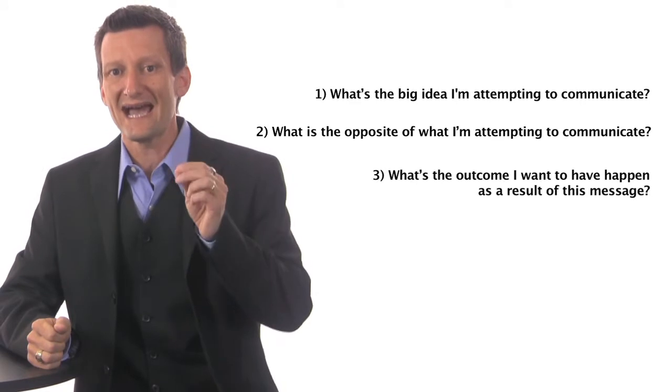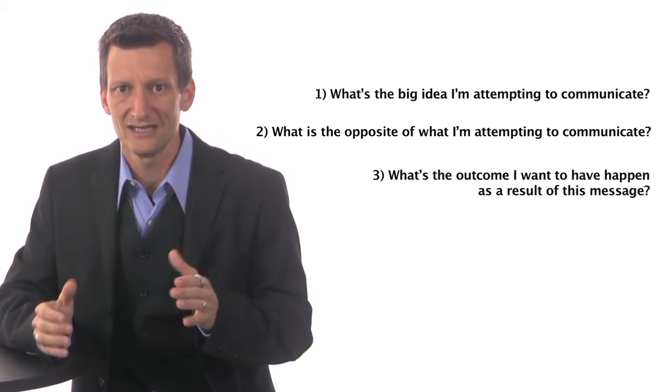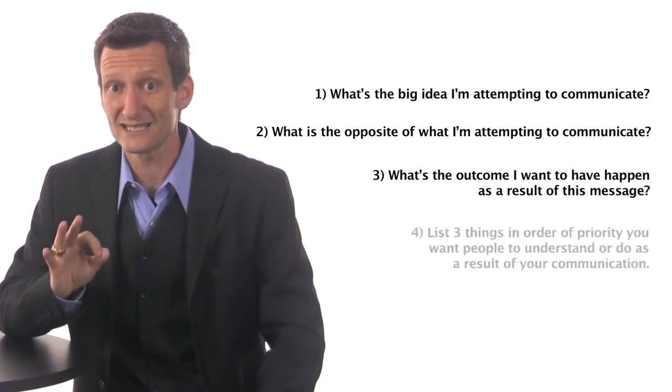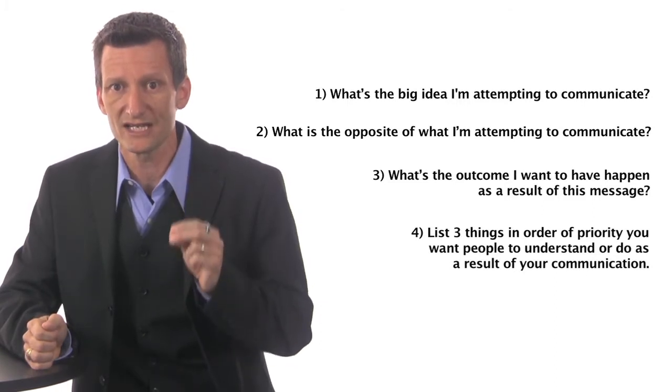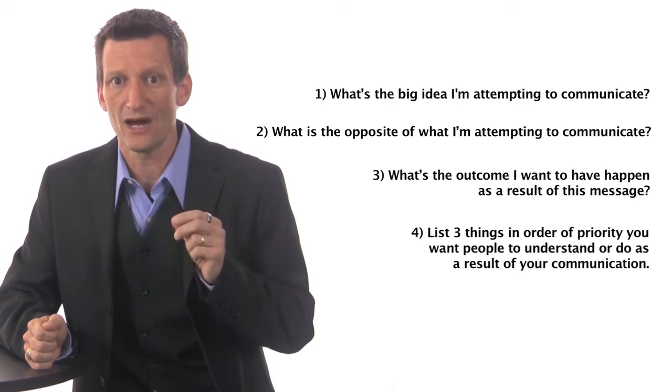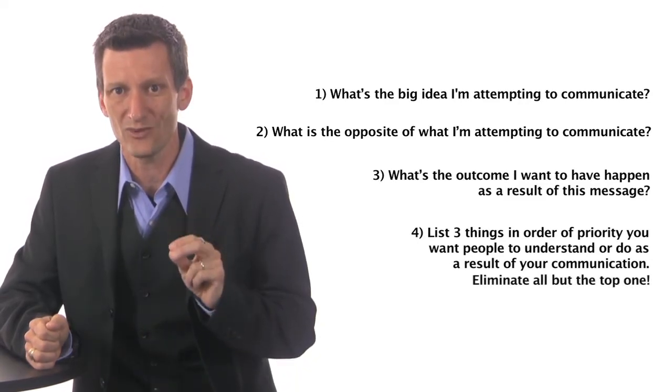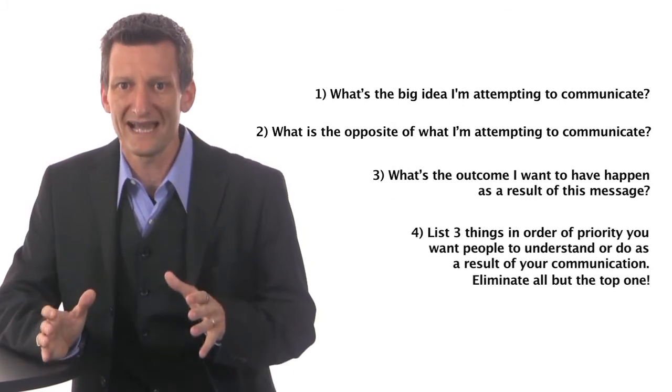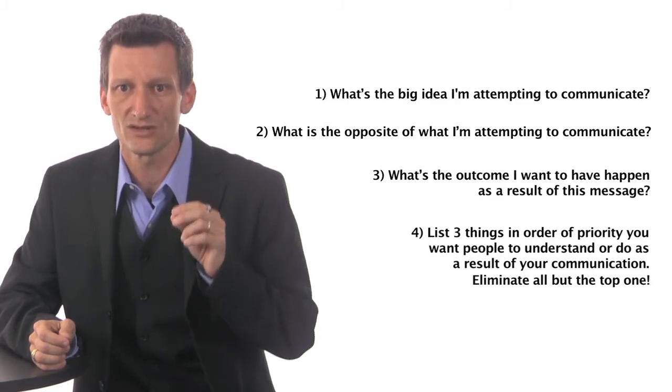Number three, what's the outcome I want to have happen as a result of this message? And then probably my favorite is this one. List three things in order of priority that you want people to understand or do as a result of your communication. Now, once you have those three things listed, eliminate all but the top one. Sometimes it's easy to lose the big idea, so you have to make sure you drill down on those questions and discover the core.